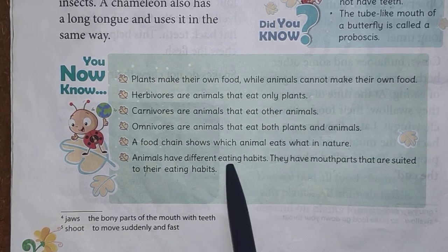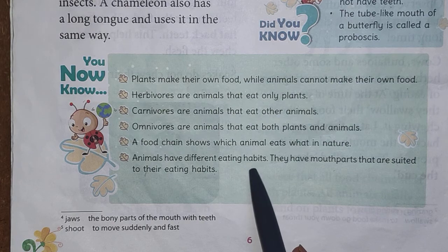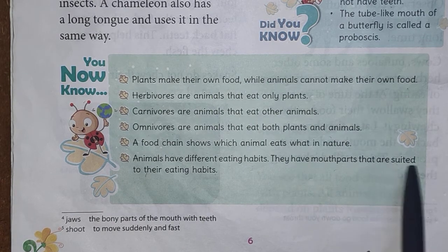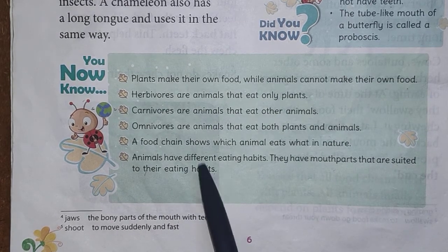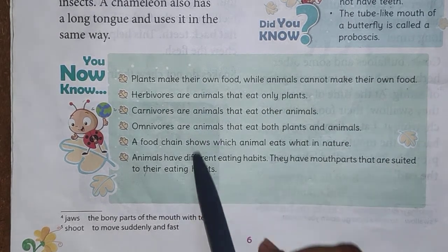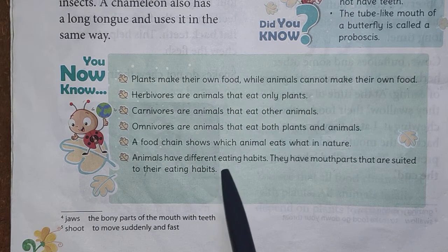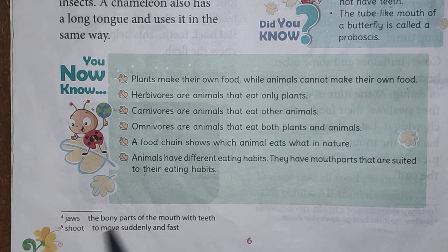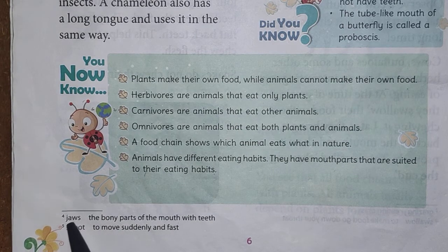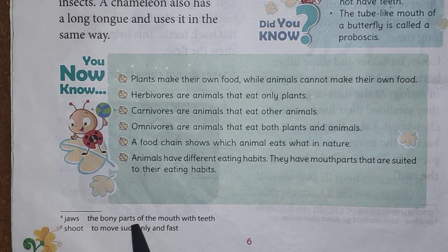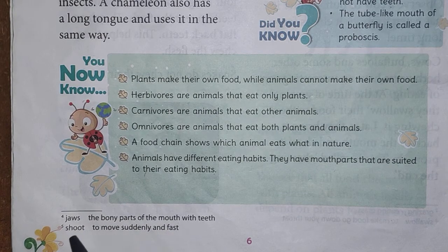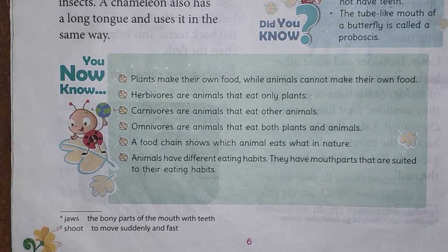Animals have different eating habits and they have mouth parts suited to their eating habits. These are the six points we need to remember. In the glossary: jaws means the bony parts of the mouth with teeth; shoot means to move suddenly and fast.